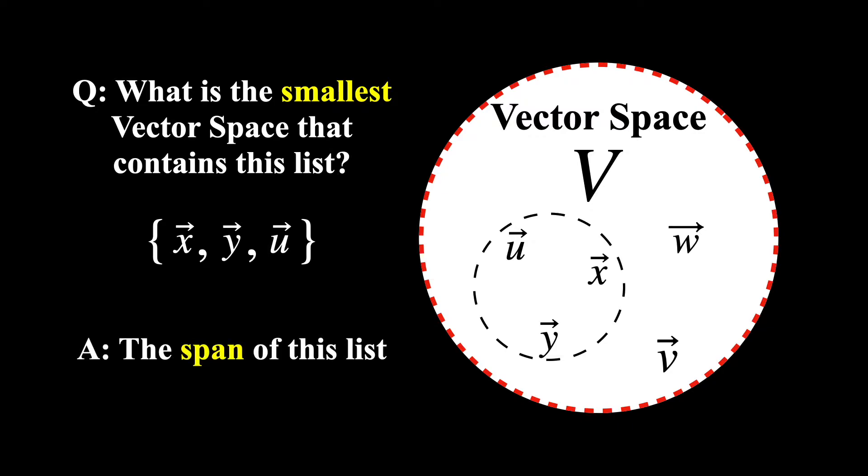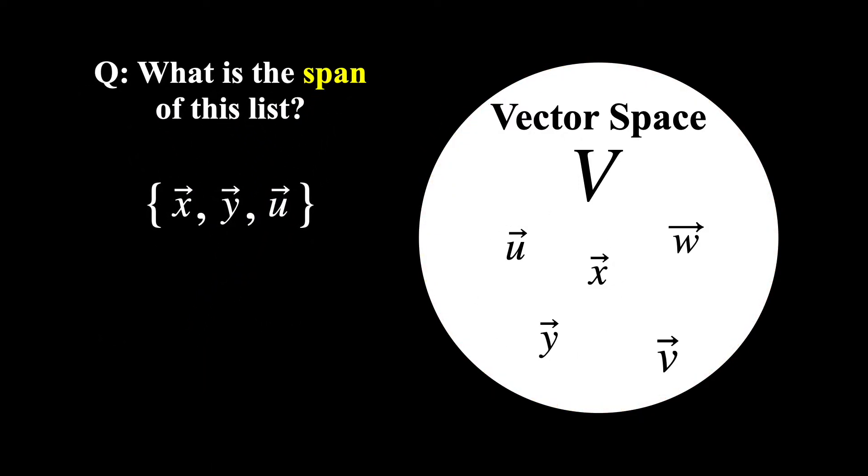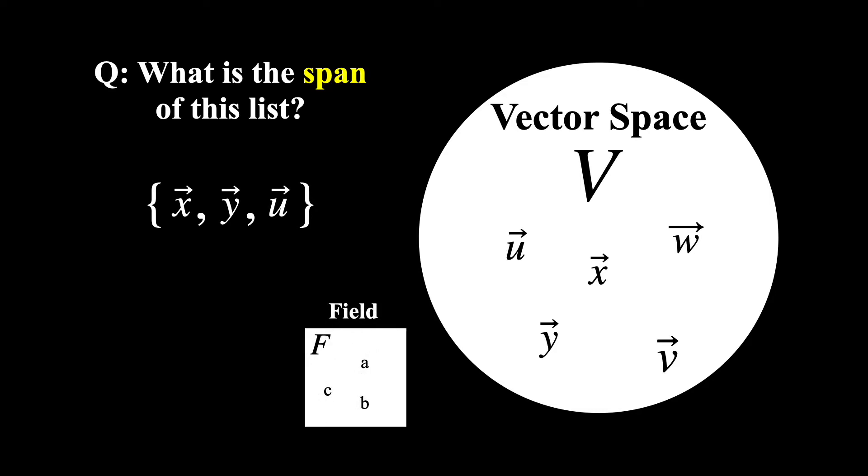Okay, so what is the span of this list? In order to answer this, we need to recall that every vector space exists over another algebraic structure called a field, and the operation known as scalar multiplication allows us to take any element from this field and multiply it with any vector in the vector space.